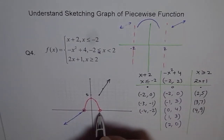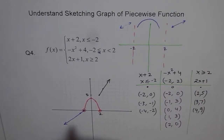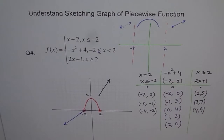The third piece is discontinuous at x equals 2, because the parabola ends with a hole at (2, 0) while the third piece starts at (2, 5). At minus 2 the function is continuous. Enjoy the piecewise function graph and understand how we got this sketch — now let's analyze it.